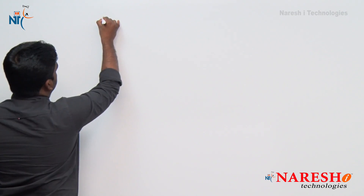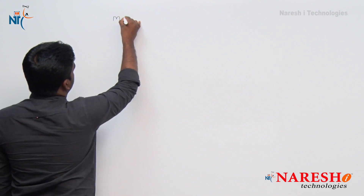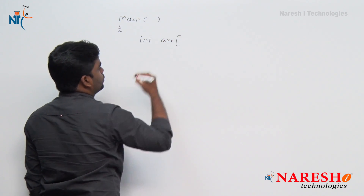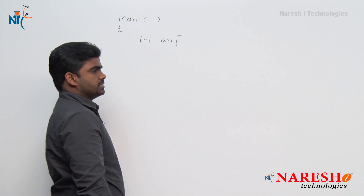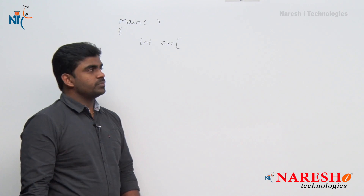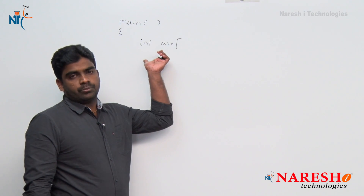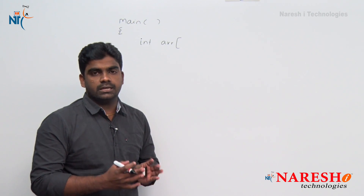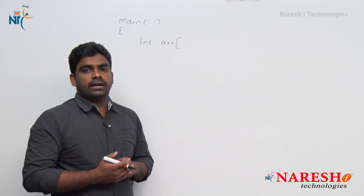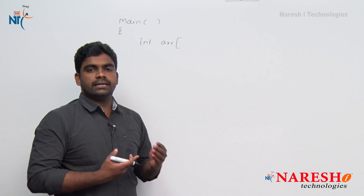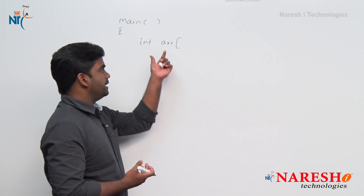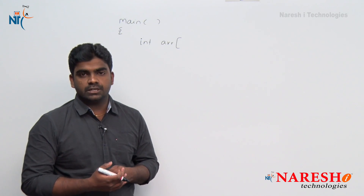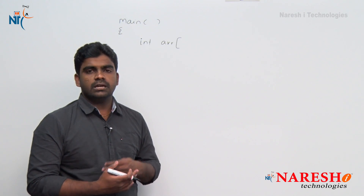We are declaring one array: int arr. See, here it is a static memory allocation only — a fixed memory allocation. If you want to increase or decrease the size of the array, we should go for a dynamic memory allocation concept, which we will see soon.